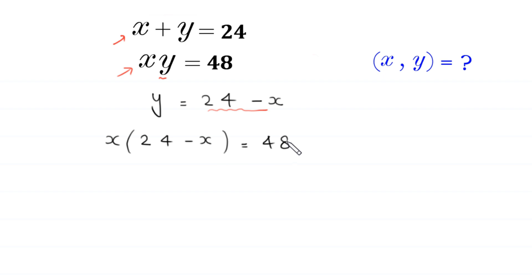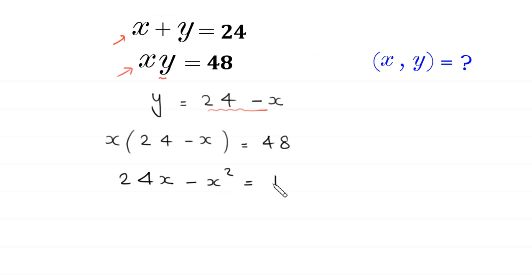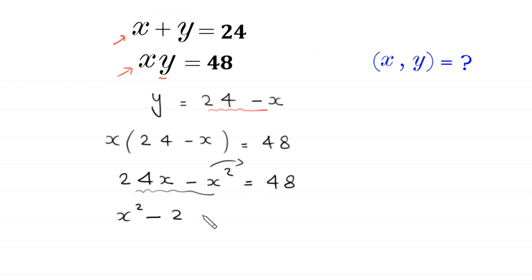We distribute x: x times 24 gives 24x, and x times negative x gives negative x squared, equal to 48. Moving both terms to the right-hand side, we get the quadratic equation x squared minus 24x plus 48 equals 0.